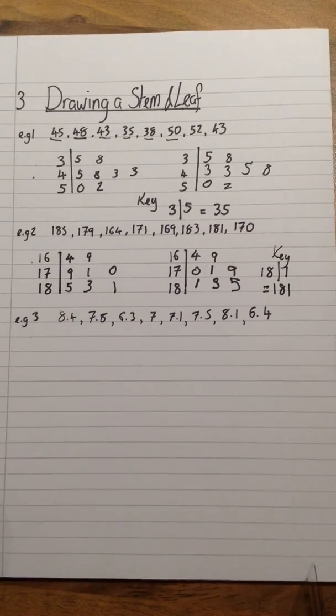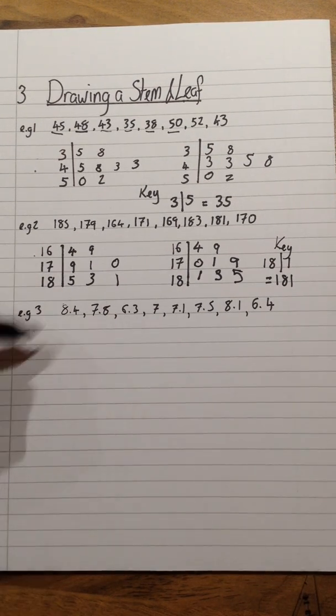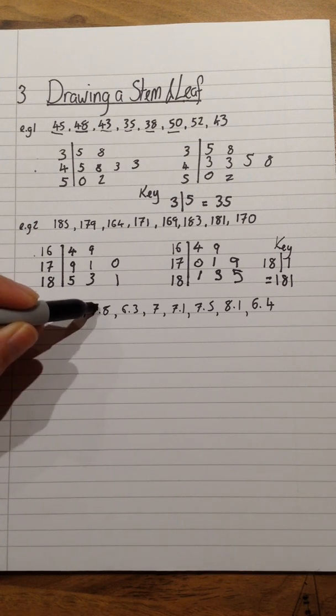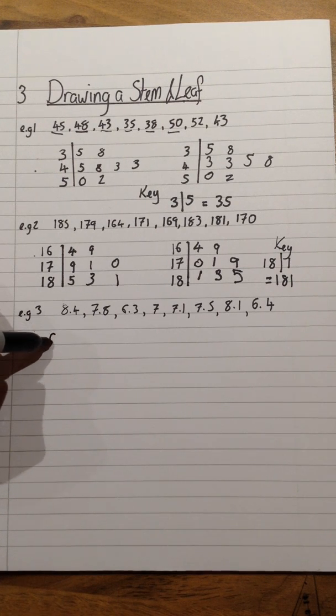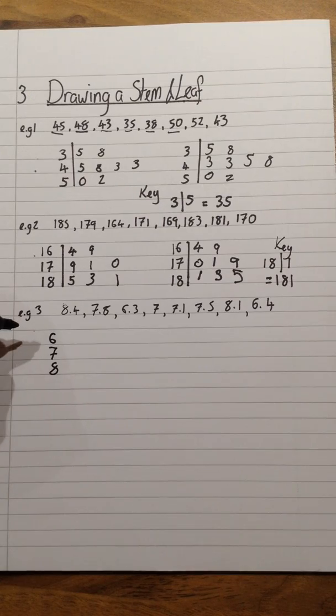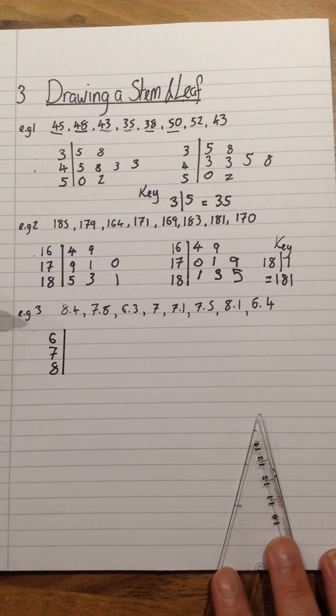The third and final example that we're going to look at is this one here. This time, we have got numbers that start with 8, 7, and 6. So we are actually going to have our stem. I normally try and put this in order, if you can. As 6, 7, and 8.